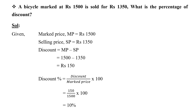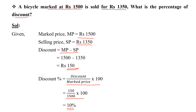A bicycle marked at Rs. 1500 is sold for Rs. 1350. What is the percentage of discount? Market price is Rs. 1500 and selling price is Rs. 1350. Discount is equal to MP minus SP, so discount is Rs. 150. Discount percentage is equal to discount divided by market price into 100, which is 150 divided by 1500 into 100. This gives the discount percentage.